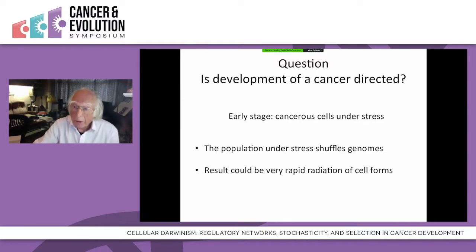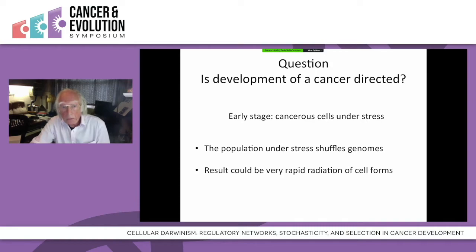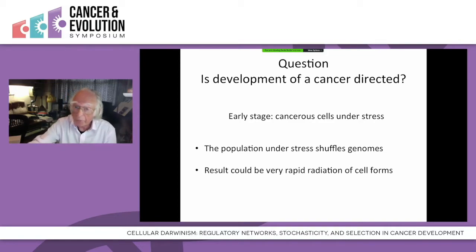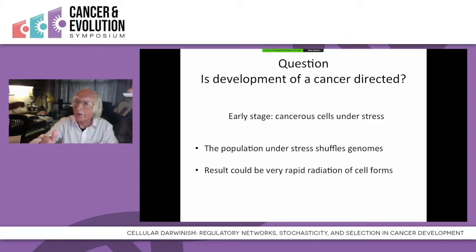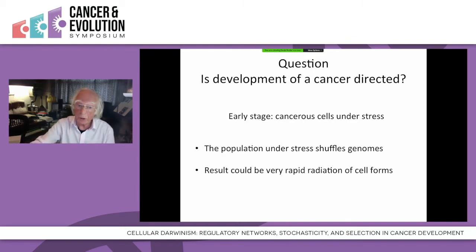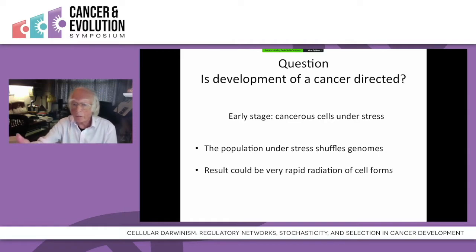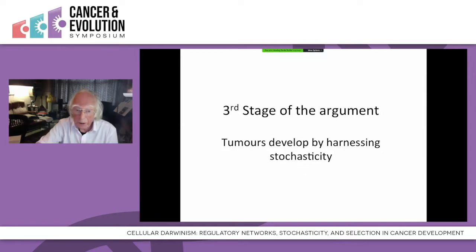Coming back to the implications for cancer: is development of a cancer directed? It seems fairly obvious that at the early stages, cancer cells — which by definition will be doing something different from the rest of the population — must be under stress. That very fact that they are functioning differently means they will be under stress in that population. It is populations, through their control mechanisms, that dictate what individual cells should be doing. What do cells do under stress? We've learned that already in this symposium from James Shapiro and others: they shuffle their genomes. And the result is a very rapid radiation of cell forms, which is precisely what people find.